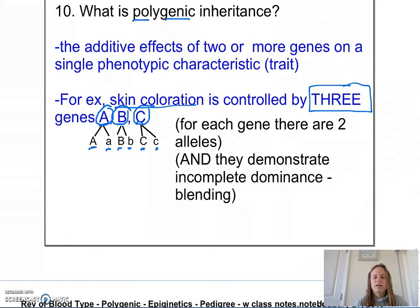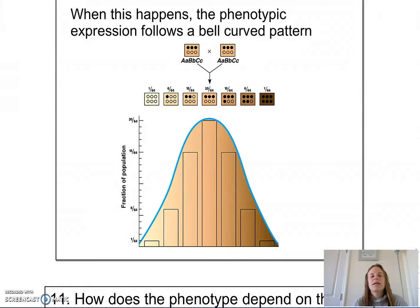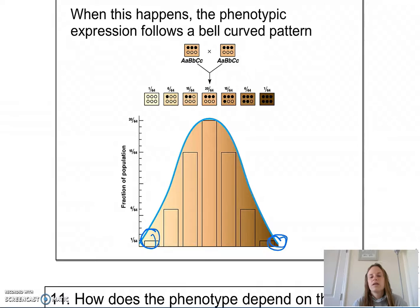Another classic example is eye color, which is actually controlled by seven genes. When you have polygenic inheritance, the phenotypic expression follows a bell-curve pattern — there aren't that many individuals with very fair skin and there aren't that many with very dark skin. The majority of organisms expressing that polygenic trait fall somewhere in the middle.